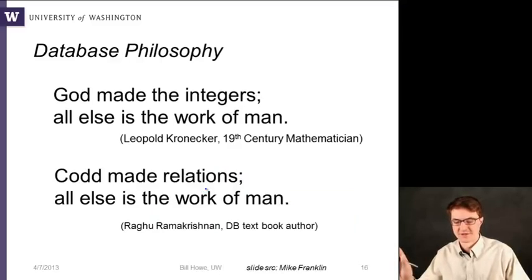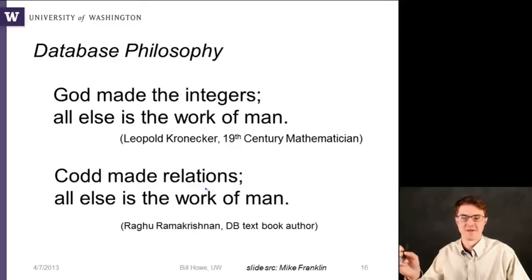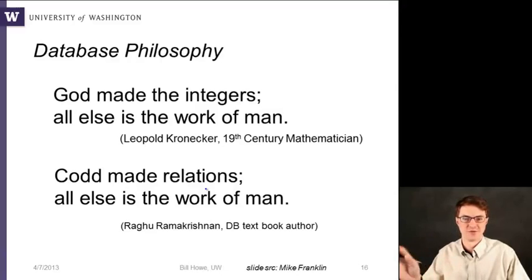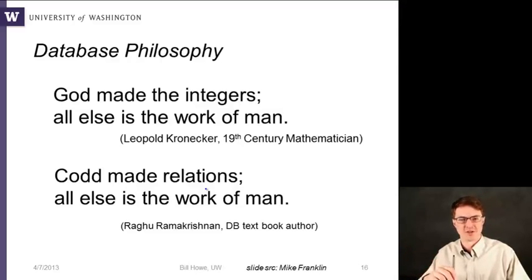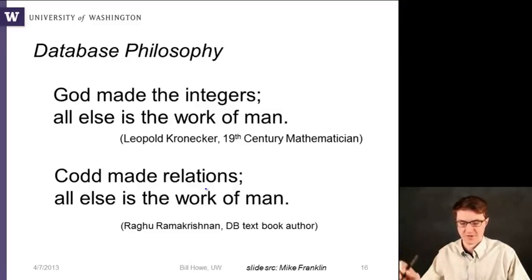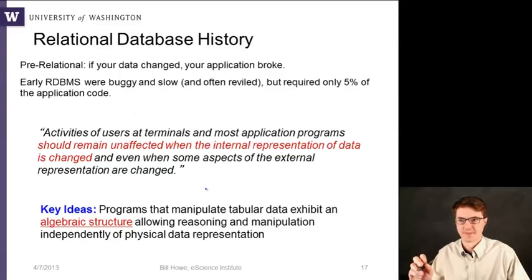The philosophy here, being a little cute about it: there's a quote from the 19th century that God made the integers and all else is the work of man. Well, Codd made the relations — a reference to Edgar Codd, who wrote the first relational database paper and went on to win the Turing Award, which is sort of the Nobel Prize in computer science. Everything is a table is the number one thing to remember about the relational data model. Everything is a relation.